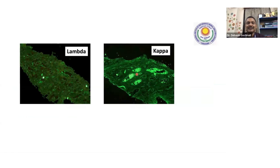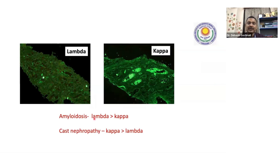Now about kappa and lambda: can you tell me whether kappa is restricted or lambda is restricted here? Lambda is negative, and kappa is 3+ positive — and where is it positive? It is positive in the cast. So this biopsy indicates cast nephropathy. Important MCQ: in amyloidosis, lambda is more than kappa — most cases have lambda restriction. Whereas in cast nephropathy, kappa restriction is more than lambda — that is the reverse. Remember this.